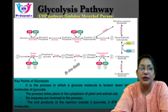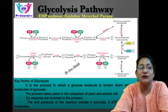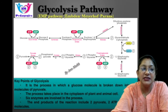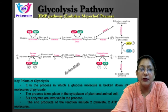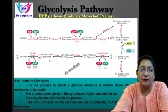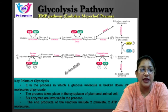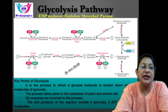In the next step, the phosphate of both phosphoglycerate molecules is relocated from the third to the second carbon, yielding 2 molecules of 2-phosphoglycerate, by the enzyme phosphoglyceromutase. The enzyme enolase removes a water molecule from 2-phosphoglycerate to form phosphoenolpyruvate. In the last step, phosphate from phosphoenolpyruvate is transferred to ADP to form pyruvate and ATP by the action of pyruvate kinase. Two molecules of pyruvate and ATP are produced as the end products.